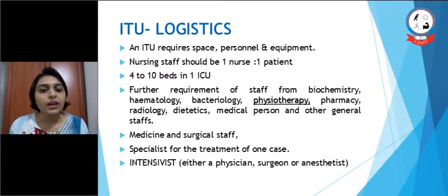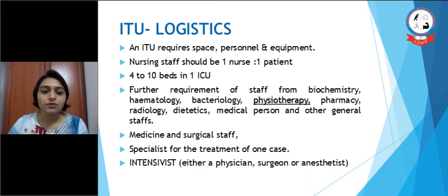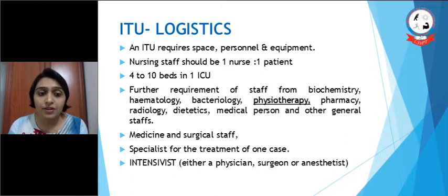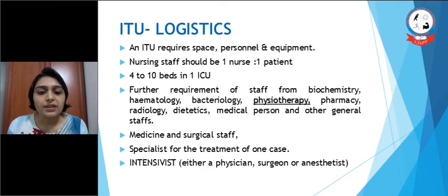Let's see the ICU logistics — how our ICU should be. An ICU requires space, personnel, and equipment. Nursing staff should be one nurse per one patient. Four to ten beds in one ICU is enough. Further requirement of staff from biochemistry, hematology, physiotherapy, pharmacy, radiology, dietitian, medical personnel, and other general staff is also included.